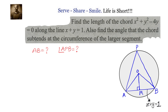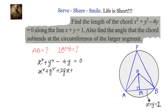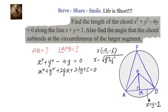First, we find the centre of the circle. The equation given is x² + y² - 4y = 0. The general form is x² + y² + 2gx + 2fy + c = 0, where the centre is at (-g, -f) and the radius is √(g² + f² - c).